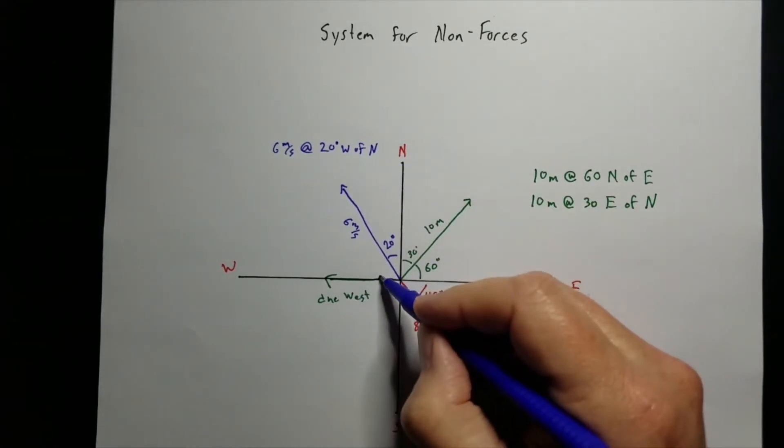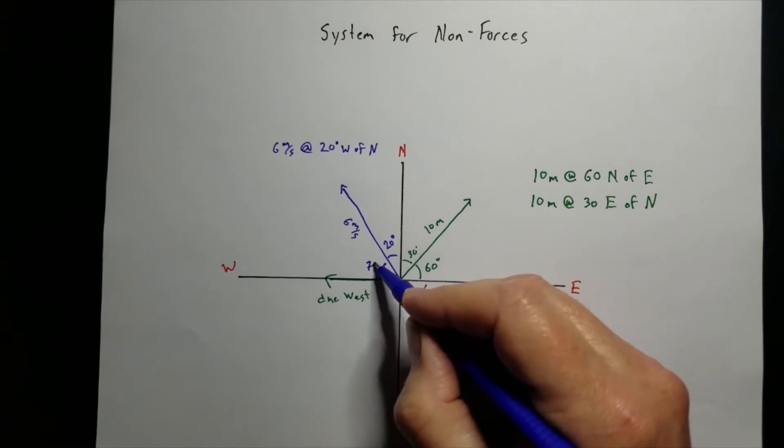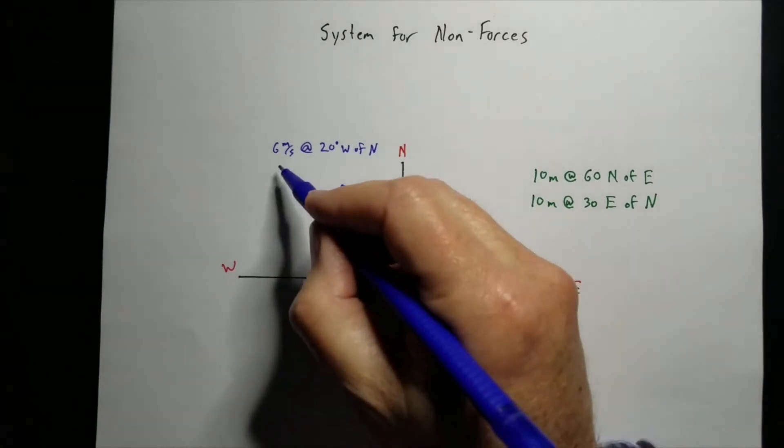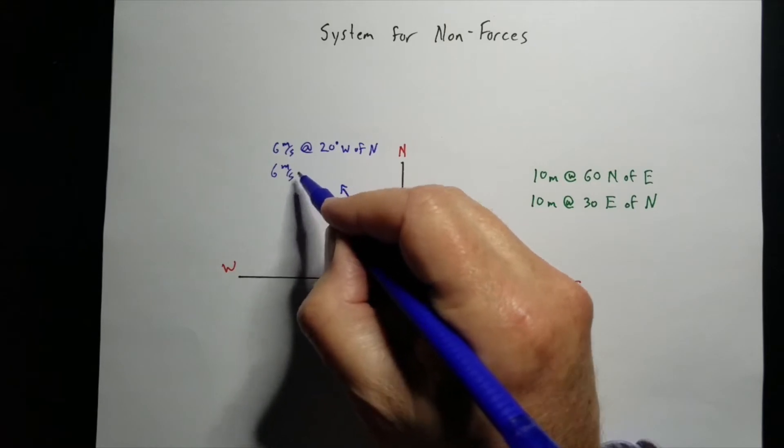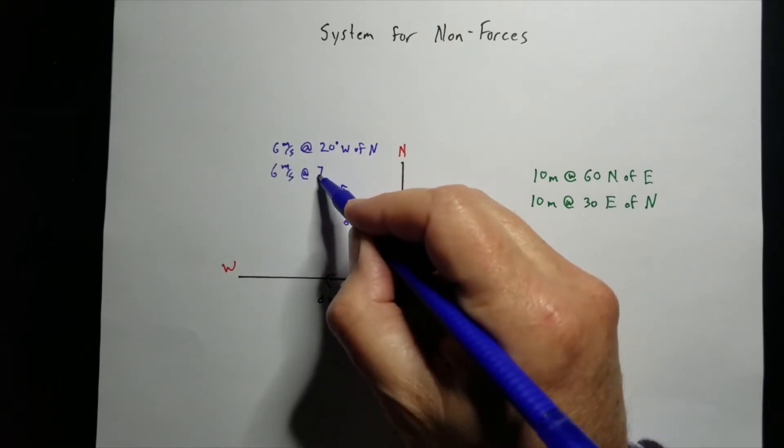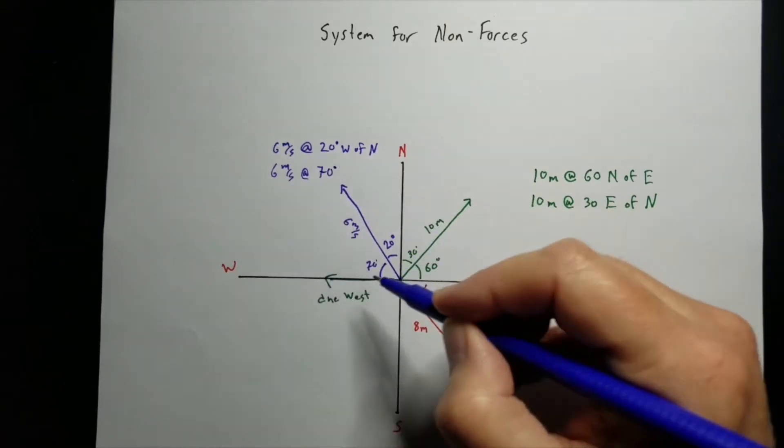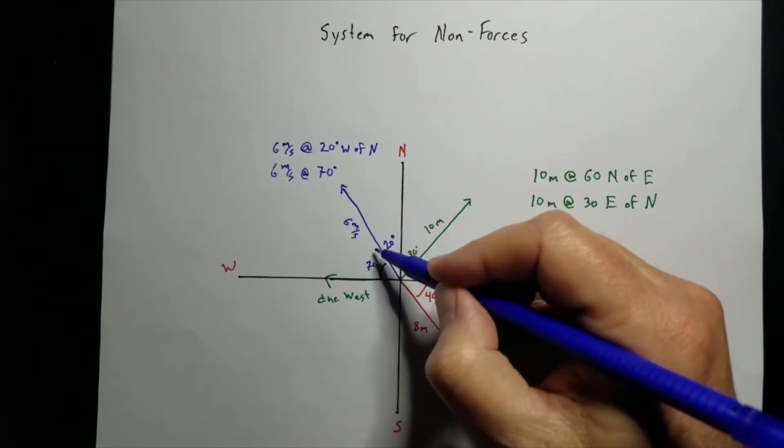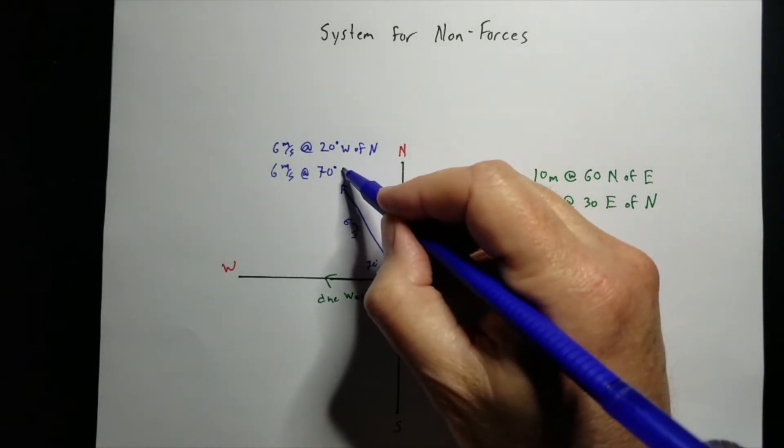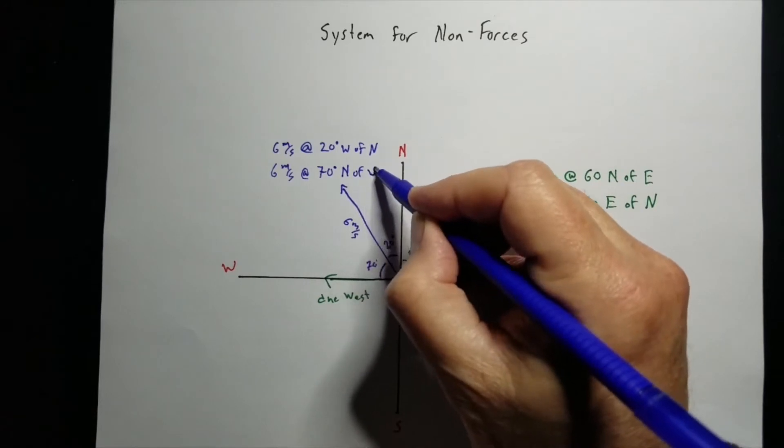By that same token, if that's 20, then this has got to be 70. So an alternate way of naming it is 6 meters per second at 70 degrees. We're going up from the west line to get to that vector north of west.